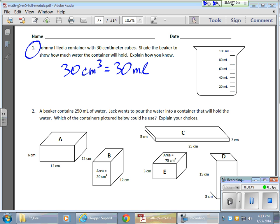Now this can be applied to a lot of problems here because what they want us to do is shade the beaker to show how much water the container will hold if it holds 30 cubic centimeters, which means that will also equal 30 milliliters. So I'm going to shade in that area right there.